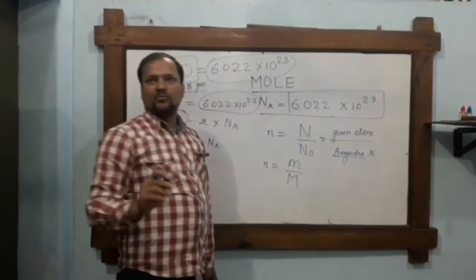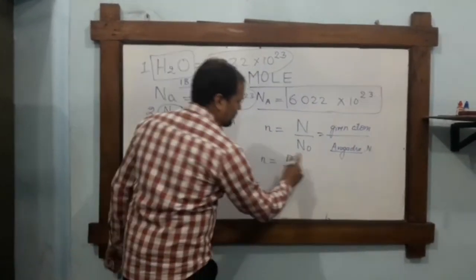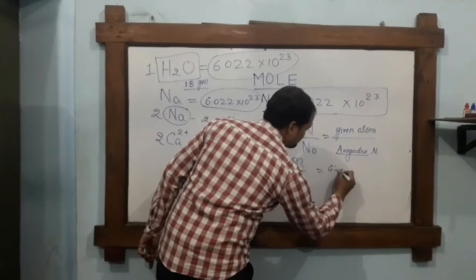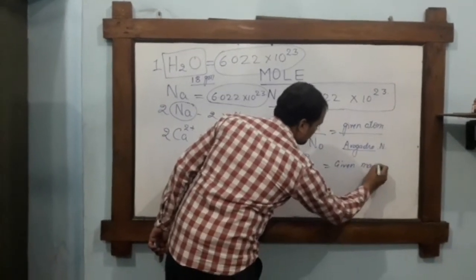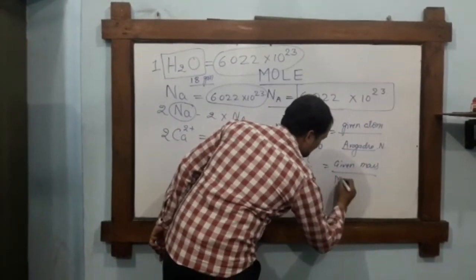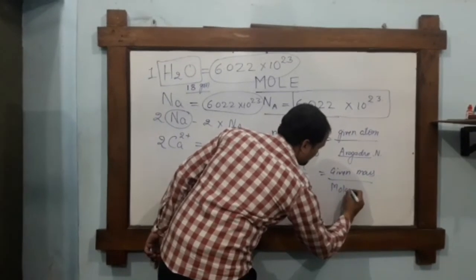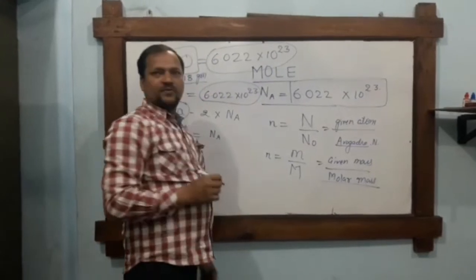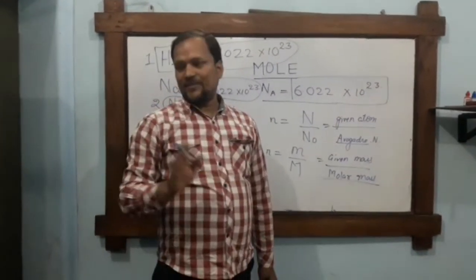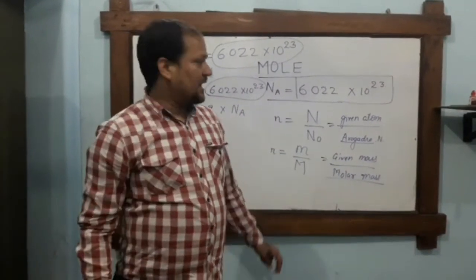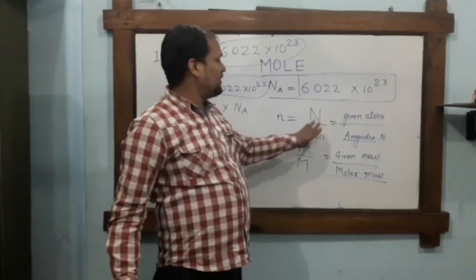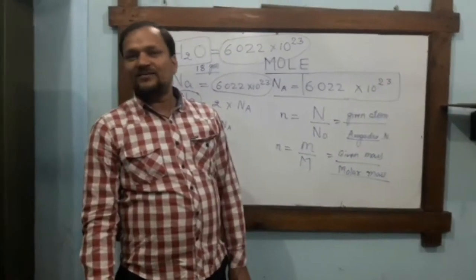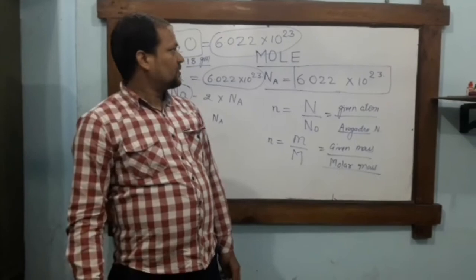Small m is the given mass and capital M is the molar mass, which is fixed for each molecule. In the next part, we will discuss how to solve numerical problems using these concepts for class 9.